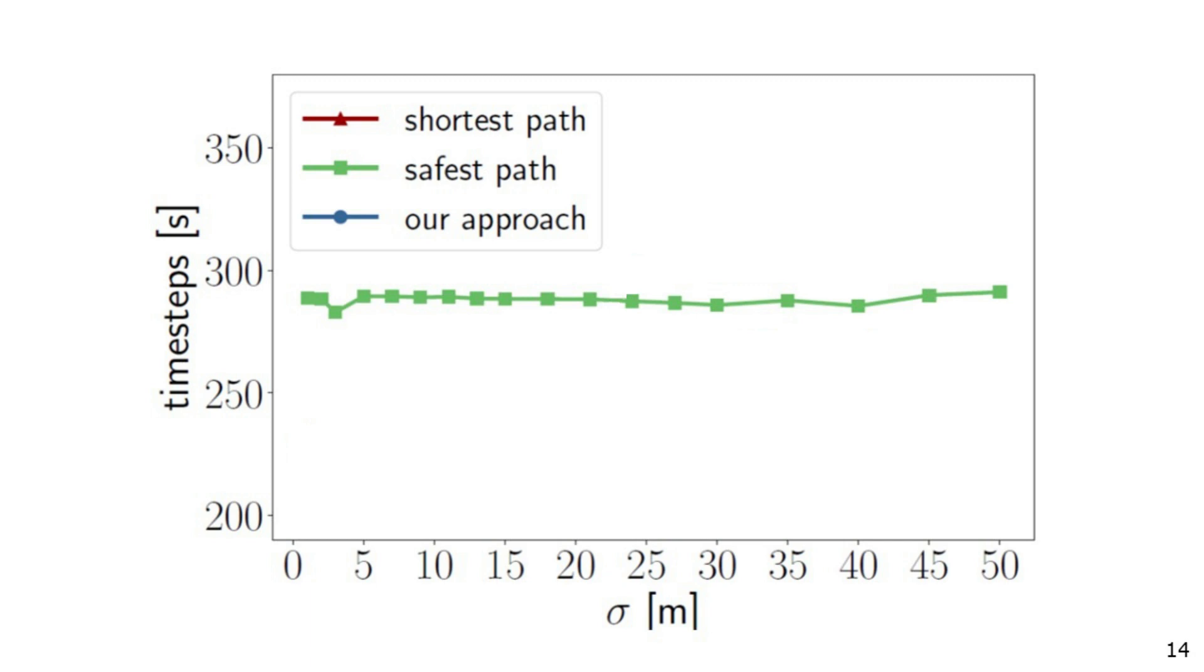The safest path policy performs similarly for different degrees of uncertainty. If the position uncertainty is low, the shortest path policy presents an average short travel time. However, following the shortest path with large position uncertainty may cause the robot to make mistakes and go in for long detours.